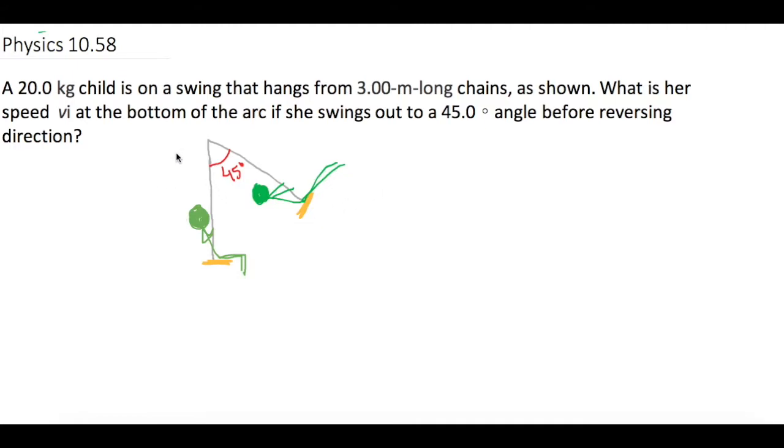So here we have our kid, and they say that she is swinging on a swing that has a chain of 3 meters. They want to know what her initial velocity is, so we're going to use conservation of energy. Before we write the equation out, let's think about this.